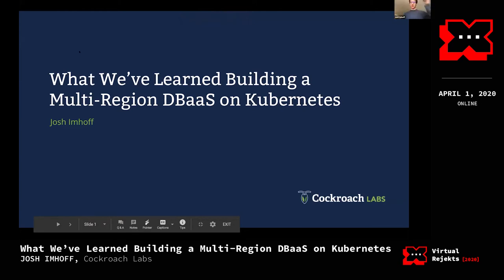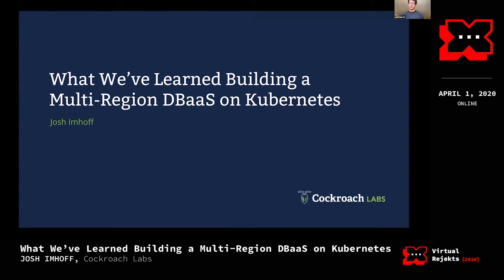Hello everybody. I work at Cockroach Labs as an SRE. We built CockroachDB, this distributed SQL database, and also Cockroach Cloud, a database as a service built on top. We built the database as a service on top of Kubernetes. We've been in beta since around November and we have 70 production clusters. I'm going to tell you about how we decided to use Kubernetes, why we use it, and what the experience has been like running this database as a service on Kubernetes.